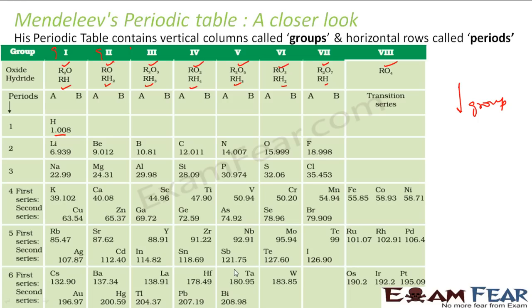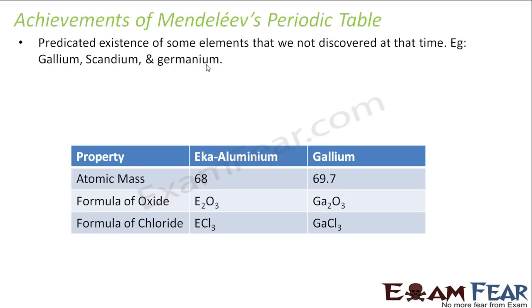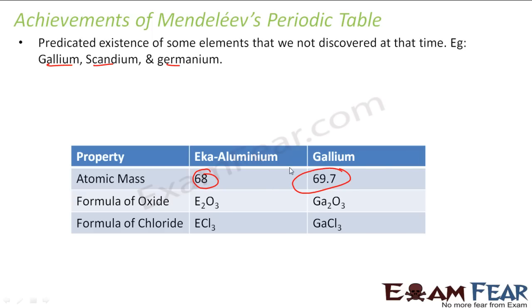The first achievement was that he predicted some elements which were not discovered at that time. When he arranged the elements, he found that some atomic masses were missing. He guessed that an element would be found in the future with atomic mass of 68, and called it Eka-Aluminium because it came with aluminium. That element was later found, and we call it Gallium.